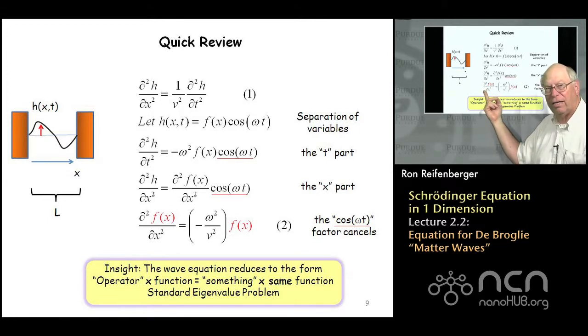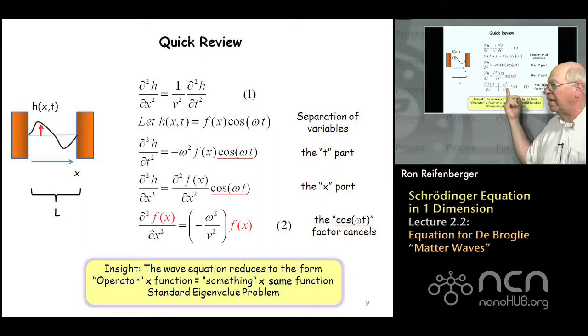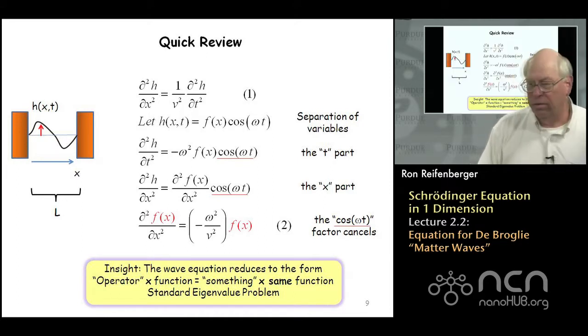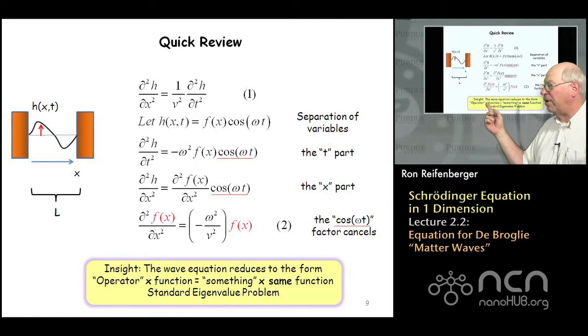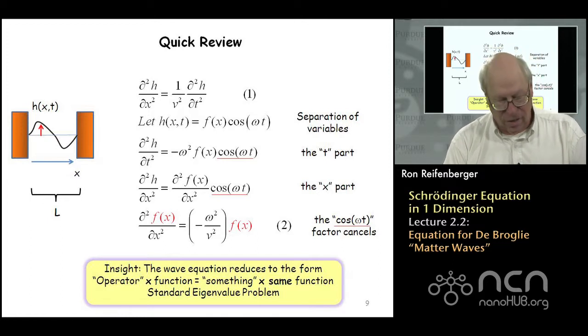And an eigenvalue problem says if you take a function F of x and you operate on it by some complicated derivative, you get the function F of x back again times something. And this something is referred to as the eigenvalue of this eigenvalue equation. So F of x is referred to as the eigenfunction. The quantity in parentheses is referred to as the eigenvalue. And this is a standard eigenvalue problem, which basically can be written as some operator operating on a function gives something back again times the same function.